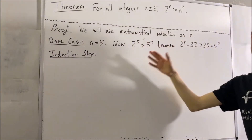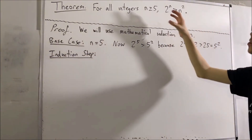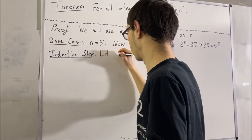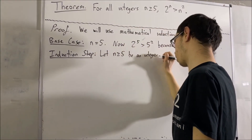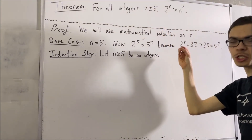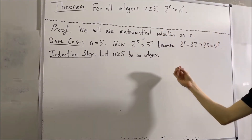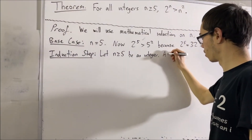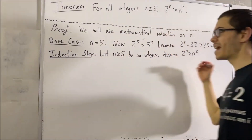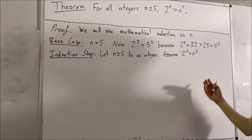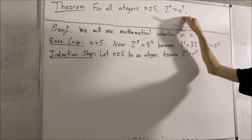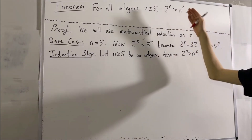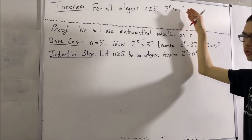In the induction step, we're picking out an arbitrary integer n greater than or equal to 5. And we're assuming for this arbitrary integer n that 2 to the n is greater than n squared. And now our whole goal is to prove that this inequality is also true for n plus 1 — that is, we're trying to prove that 2 to the n plus 1 is greater than n plus 1 squared.